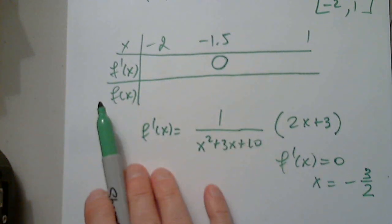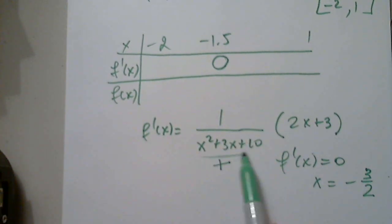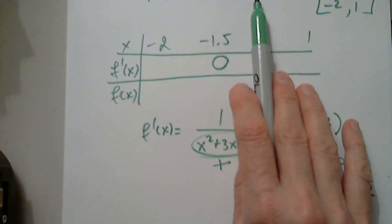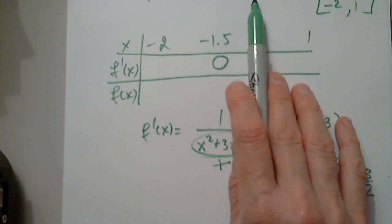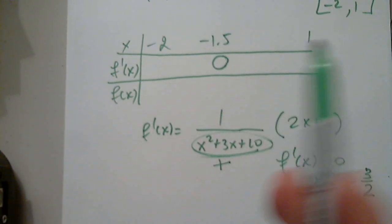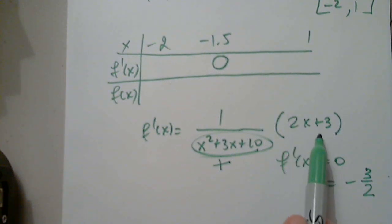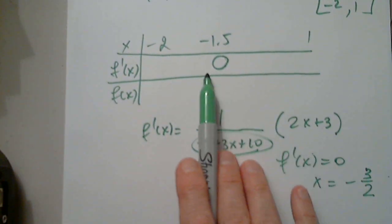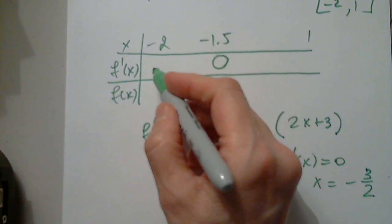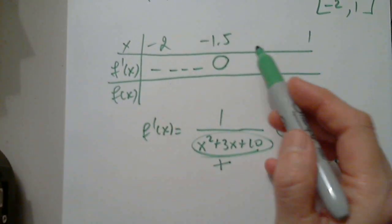So then to the left, so this is always positive. It has to be. Otherwise, natural log does not exist. So then to the left of negative 3 over 2 or negative 1.5, like negative 2, this will be negative. And on the other side, it will be positive.